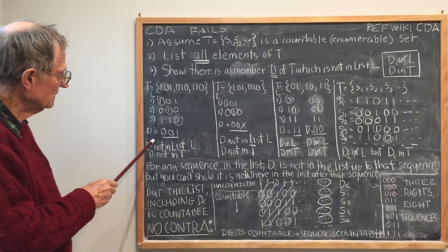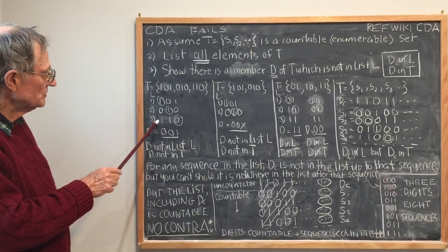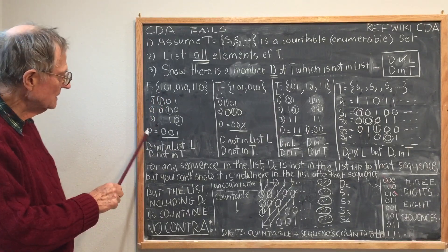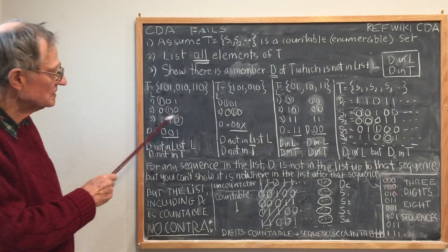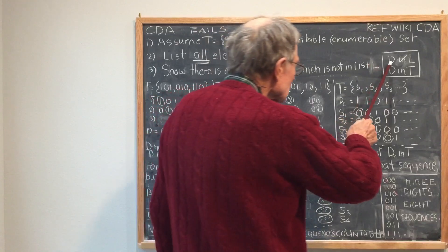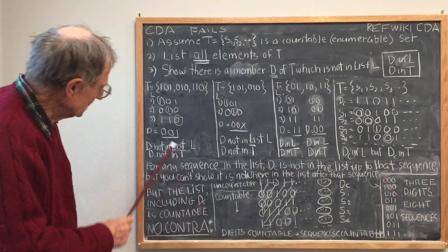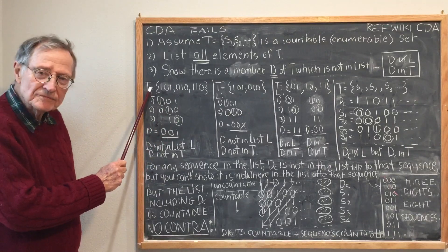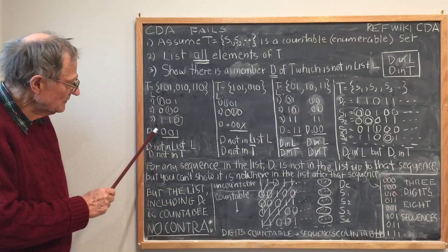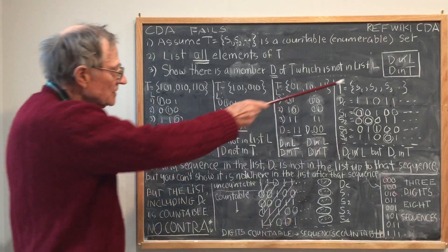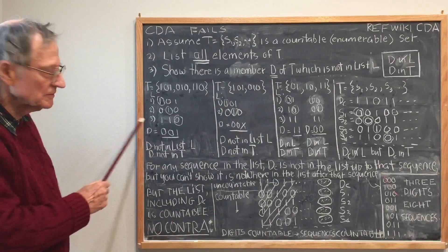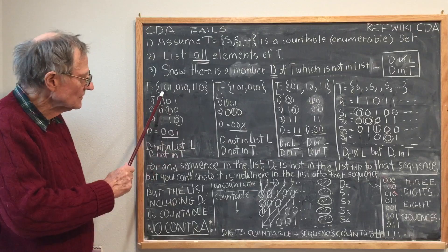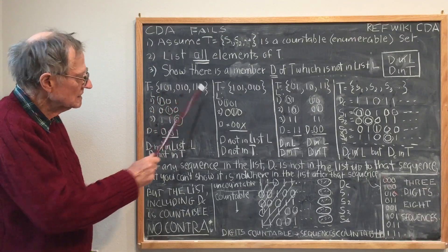So I've created an element D which is not in the list. However, D = 001 is also not in T, the set T. So therefore, I haven't satisfied both conditions, and I wasn't able to create a contradiction to the assumption these are uncountable. Therefore, this is countable.